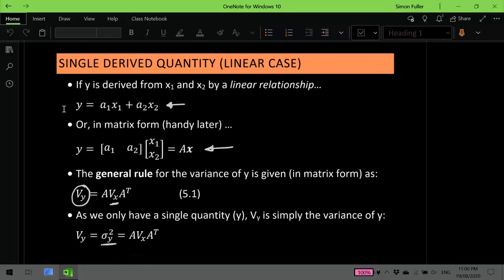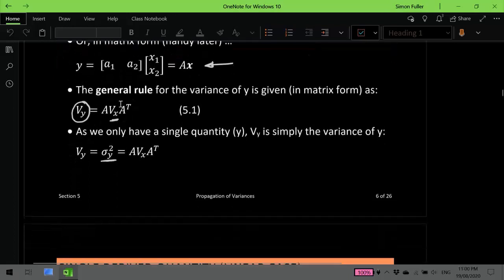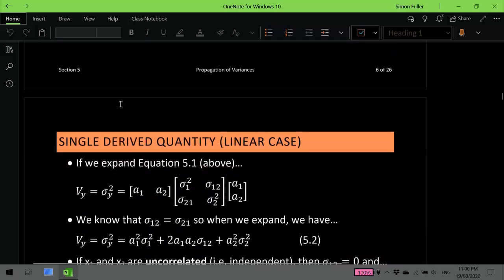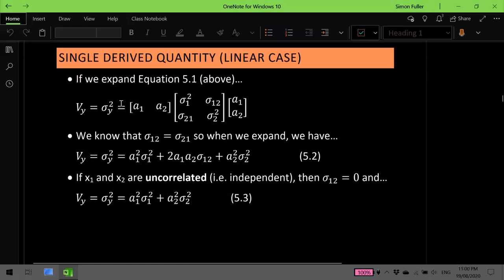Now if we were to expand out this general rule, we would get an expression for the variance-covariance matrix of y, being just the variance of y. We could expand out those, substitute in our matrices, and expand them, and work out a relationship for the variance of y that looks something like this.